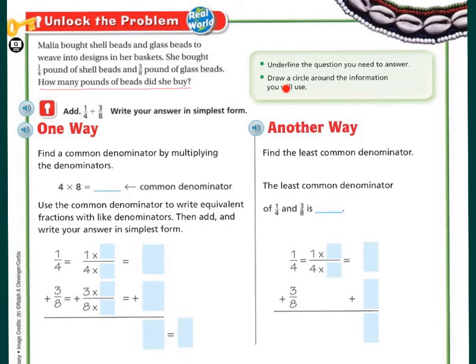Next it asks, draw a circle around the information that you will use. I'm going to need the one-fourth pound of shell beads and the three-eighths pound of glass beads. So I'm going to add the one-fourth and the three-eighths. Write your answer in the simplest form. First we're going to have to find the common denominator by multiplying the denominators. 4 times 8, which is 32. Don't necessarily have to do that, but in this example they do.